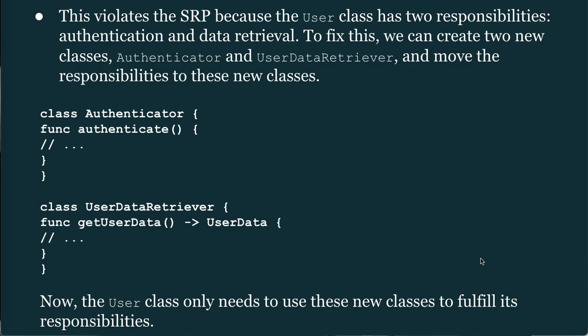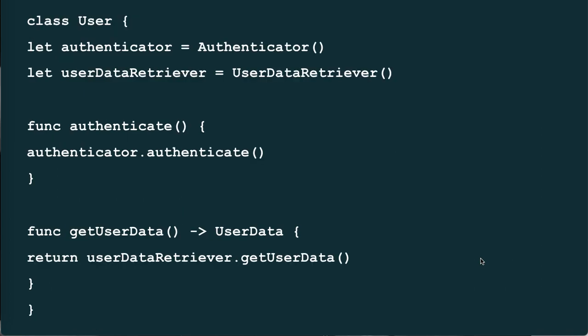Now the User class only needs to use these new classes to fulfill its responsibility: class User { let authenticator = Authenticator(); let userDataRetriever = UserDataRetriever(); func authenticate() { authenticator.authenticate() }; func getUserData() { return userDataRetriever.getUserData() } }. We have created instances of Authenticator and UserDataRetriever and use them within these functions.